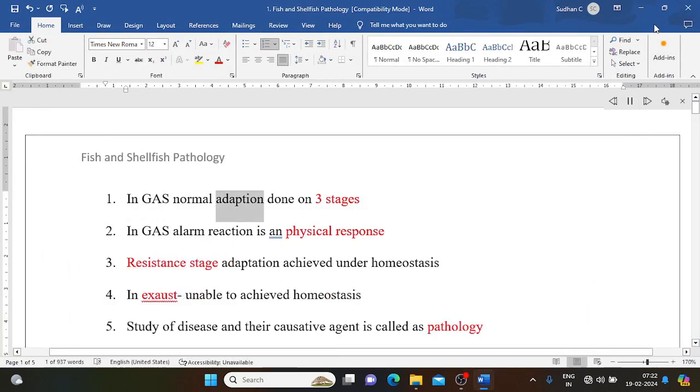In GAS normal adaptation done on three stages. In GAS, alarm reaction is a physical response. Resistance stage adaptation achieved under homeostasis. In exhaust unable to achieve homeostasis. Study of disease and their causative agent is called pathology.